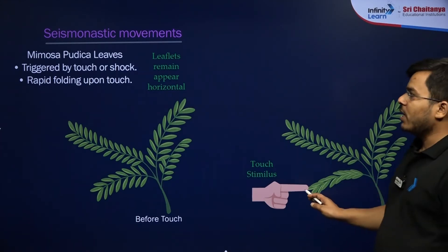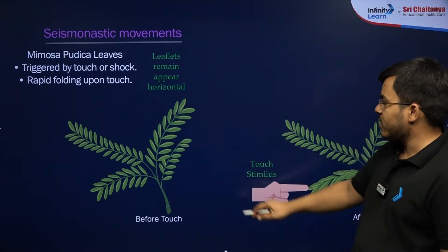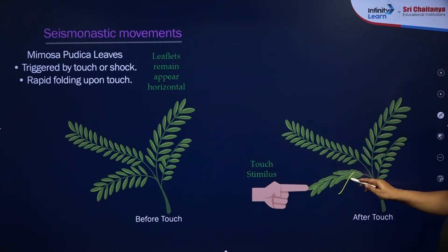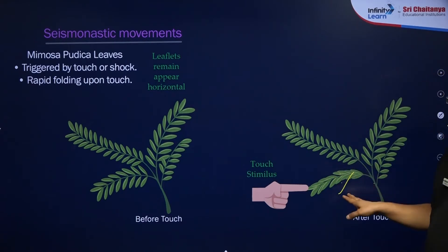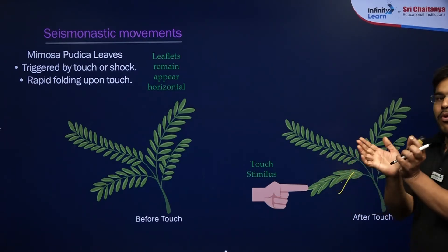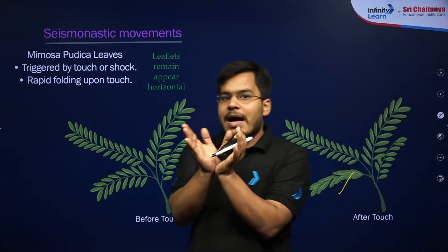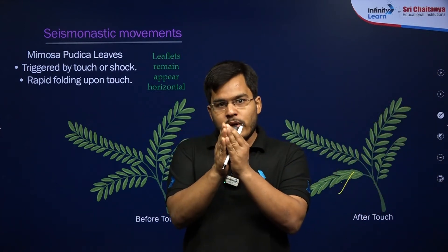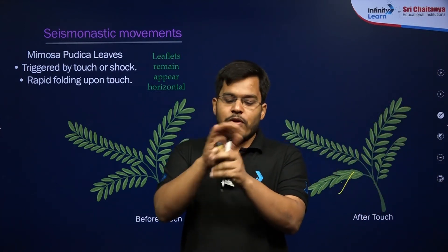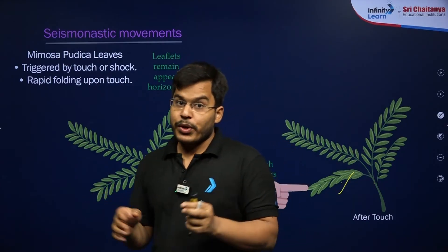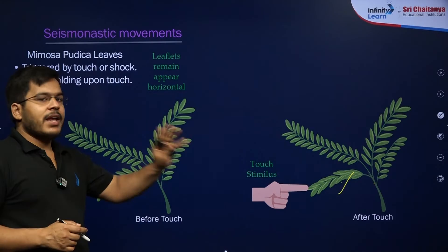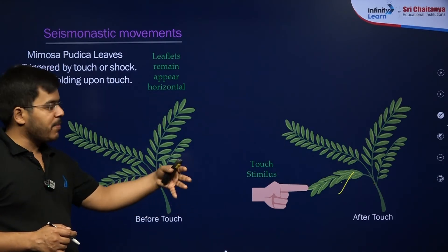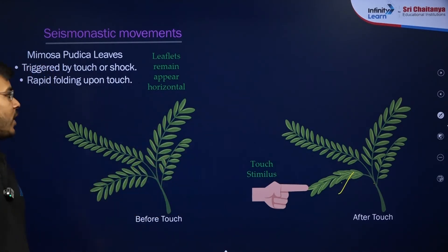For example, a seismonastic movement — if you touch the Mimosa pudica plant, or touch-me-not plant, its leaves will fold. If you touch this plant from any direction, the leaf will fold in the same way. The direction of leaf folding doesn't change regardless of the direction you touch it from. That's why we say the stimulus direction does not affect the direction of nastic movement — they have their own direction of movement.